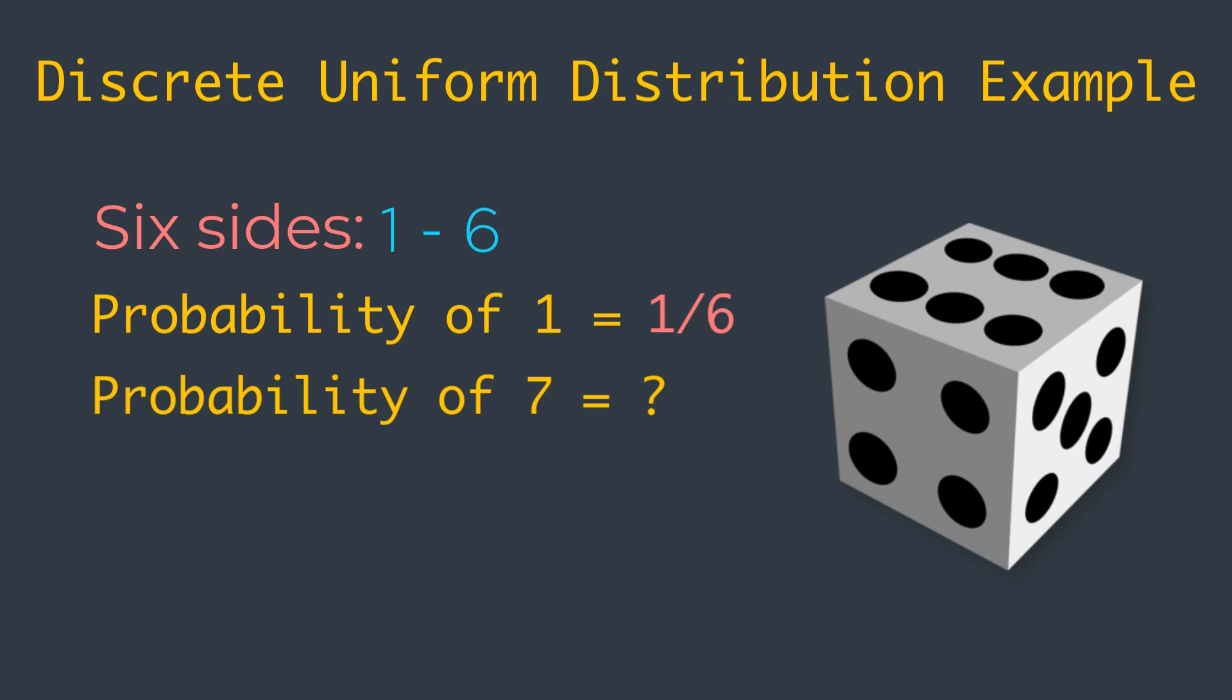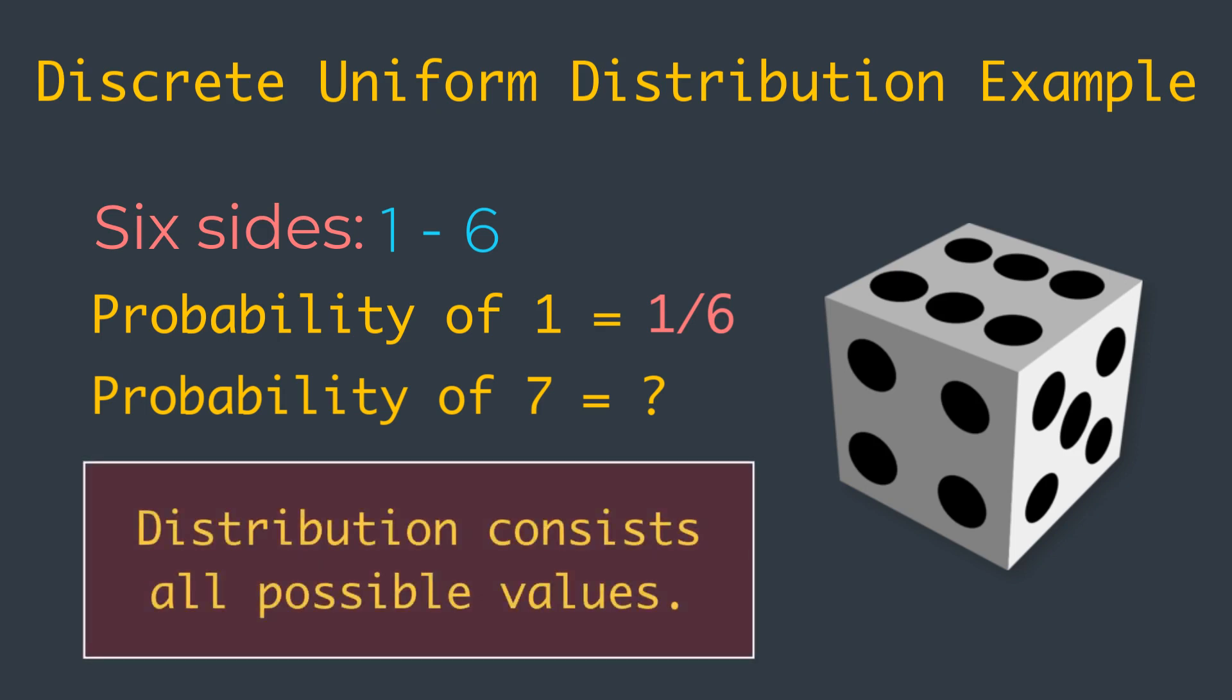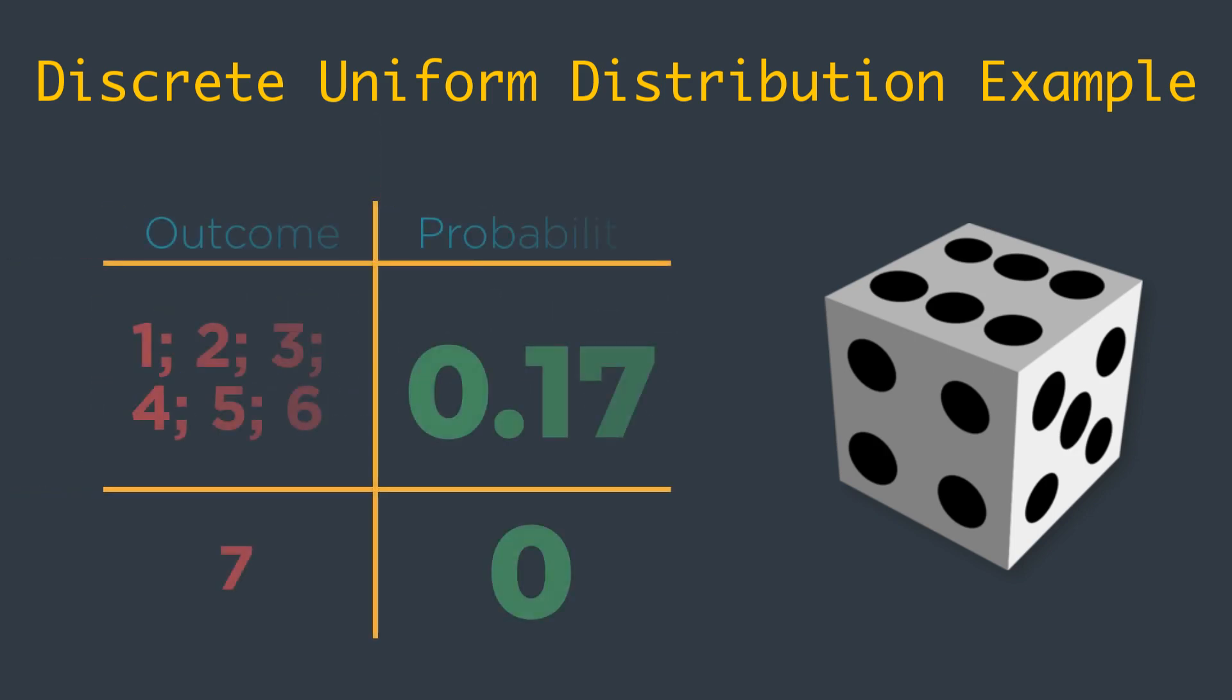If we generalize this, the distribution of an event consists not only of the input values that can be observed, it is actually made up of all possible values. So the distribution of the event like rolling a die can be represented in this way.